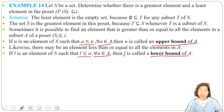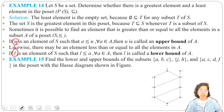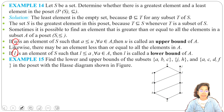Let's see Example 15: Find the lower and upper bound of the subsets {A, B, C}, {J, H}, and {A, C, D, F} in the poset with the Hasse diagram shown in the figure. This is the Hasse diagram and we need to find upper bound and lower bound for these subsets.